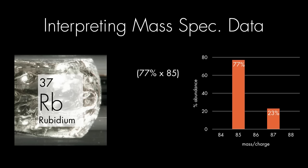If we multiply the percentages times their mass, and add that up, then average that over 100 atoms, we'll find the average atomic mass of rubidium.